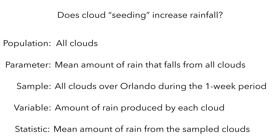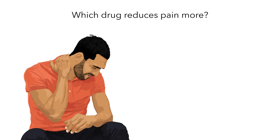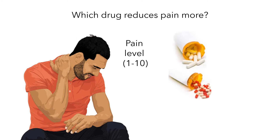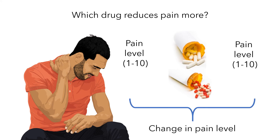Most of us experience pain at some point, and there are many drugs available to help treat the pain, so we might want to know which drug reduces pain more. To investigate this, the researchers recruited 56 people who experienced chronic pain and took either acetaminophen or ibuprofen, had them rate their pain on a scale of 1 to 10, let them take their preferred pain medication, and then measured the pain again to compute the change in their pain level. Take a moment to think about what the population, parameter, sample, variable, and statistic would be.